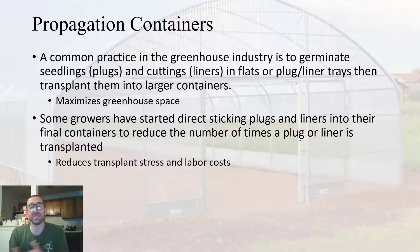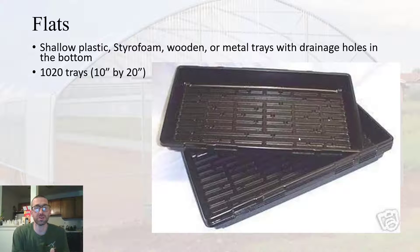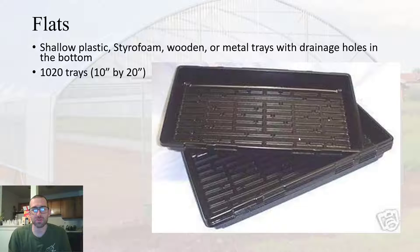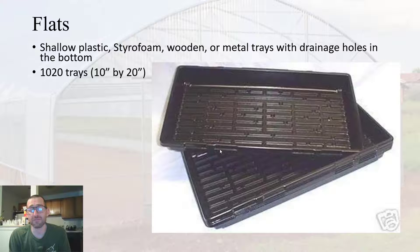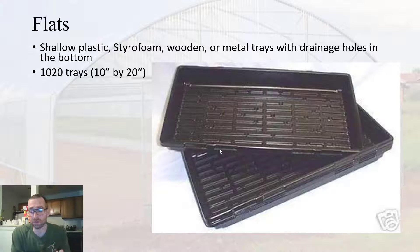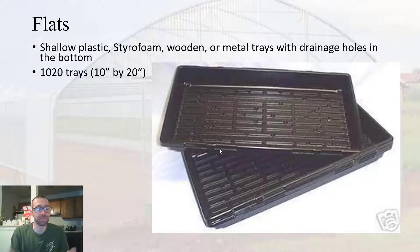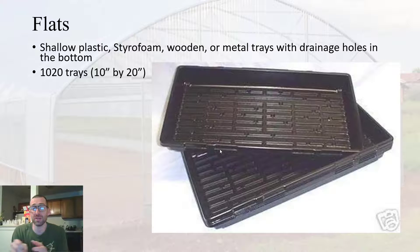Let's look at some of these containers. These are your flats — you're probably all familiar with them. They are 1020 trays, so 10 inches by 20 inches, with holes drilled in the bottom for drainage. Flats can be made of different materials — wood, metal, styrofoam — but nowadays typically you are seeing plastic flats. If you are starting your seeds in your flat, you would sow your seeds within there, and then once your seedlings get to a certain developmental stage — typically when they have their first true leaves — you could transplant them into other containers.